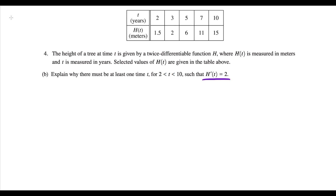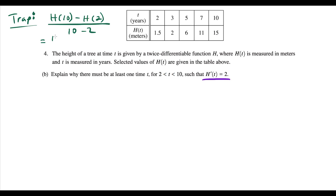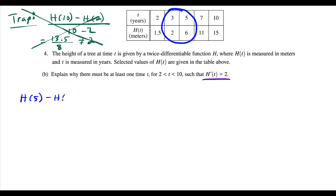The first trap is that students always assume we use the endpoints, doing h of ten minus h of two over ten minus two. But 15 minus 1.5 over 10 minus two is 13.5 over eight, which is not equal to two. So we have to go on a scavenger hunt for two points with slope equal to two. Those points are h of five minus h of three over five minus three, which gives six minus two over two, equal to two.